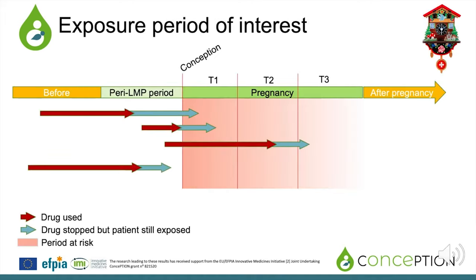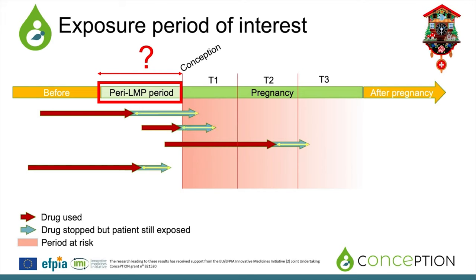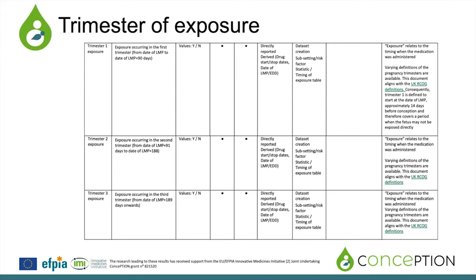A very important definition is the exposure period of interest. After a drug intake, even if you stop taking that drug, the molecule may still be active in the body, and that time will define the period called the peri-LMP period — for peri-last menstrual period — before pregnancy, in which we consider that the pregnant patient has been exposed to the drug in the period at risk. We will also report the trimester of exposure during pregnancy: trimester 1 from the date of LMP to 90 days after; trimester 2 from 91 days to 188 days after LMP; and trimester 3 from 189 days to the end of pregnancy, according to the Royal College of Obstetricians and Gynecologists definition.